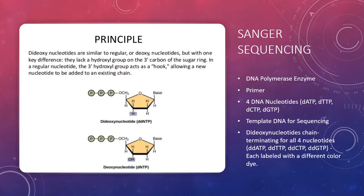There are a few things you need to perform the Sanger sequencing method. That is DNA polymerase enzymes, a primer, four DNA nucleotides, your template DNA for sequencing, and dideoxynucleotides for the chain terminating of all four nucleotides. The DD here stands for dideoxynucleotide, and each of these are labeled with a different color dye.